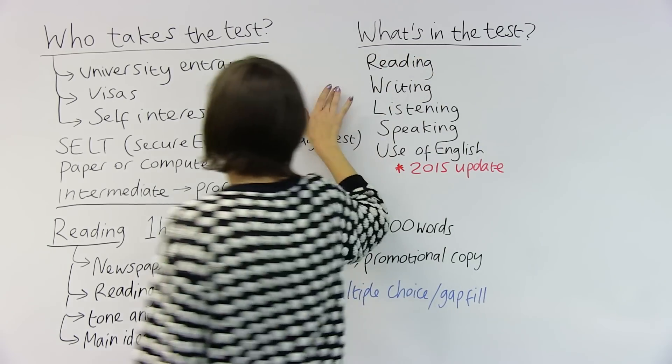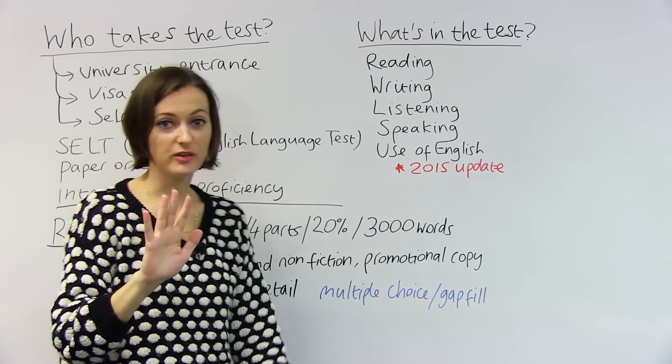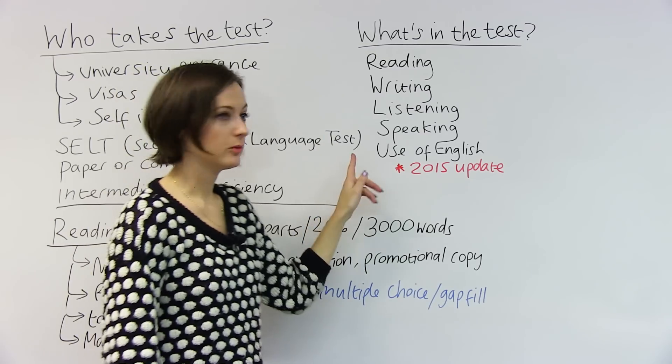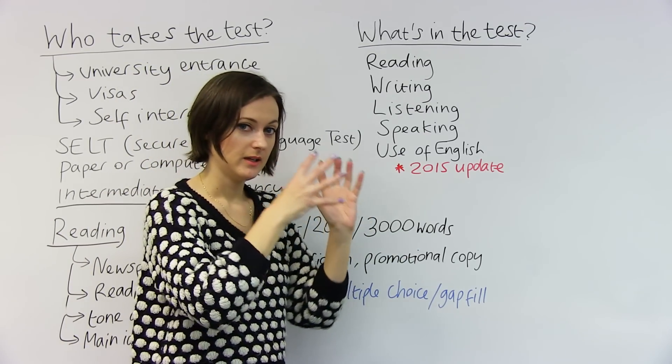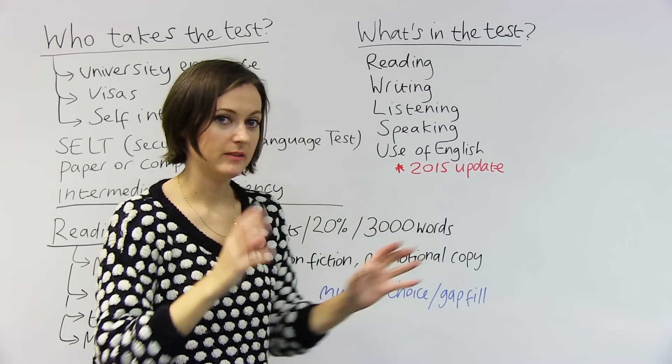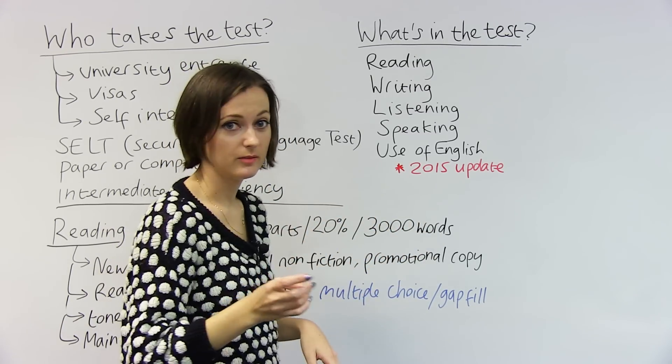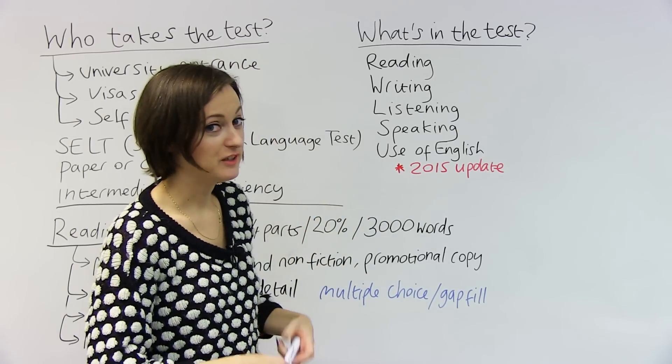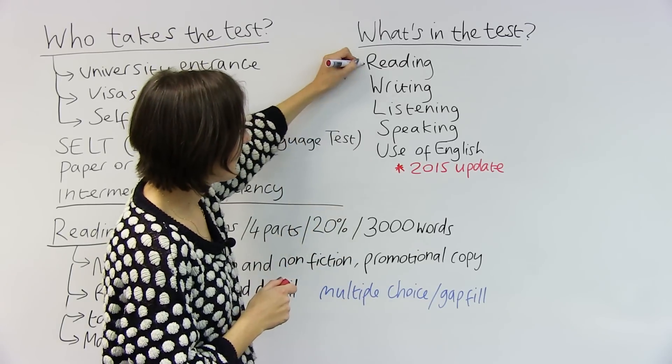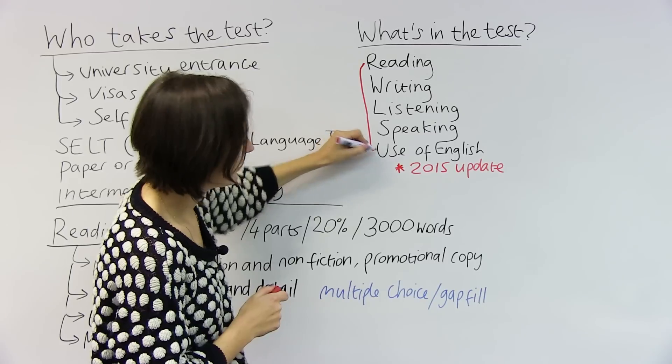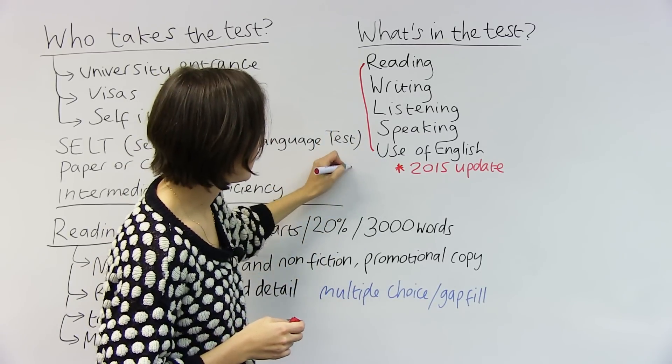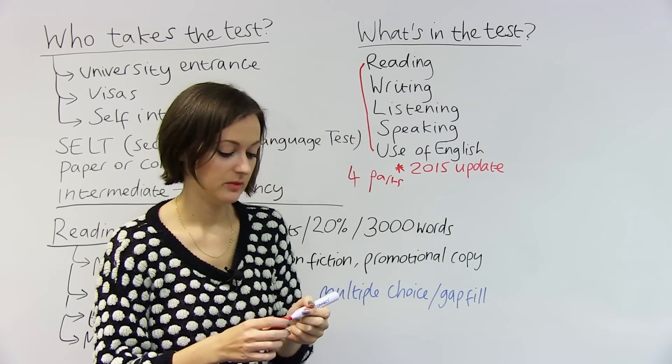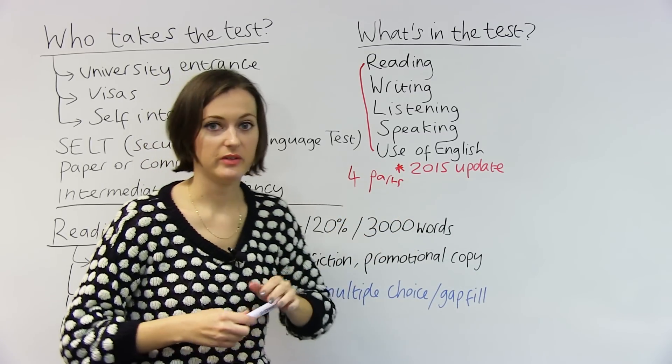What's in the test? There are five parts at the moment: a reading part, a writing part, a listening part, a speaking part, and also this use of English, which is a vocabulary and grammar combined test. Importantly though, in 2015, the reading test and the use of English will be together in one part. So that means there'll just be four parts, 2015 onwards.